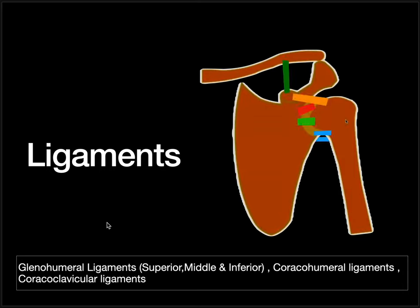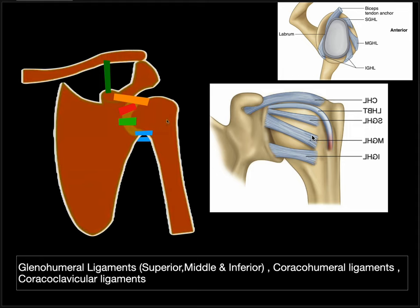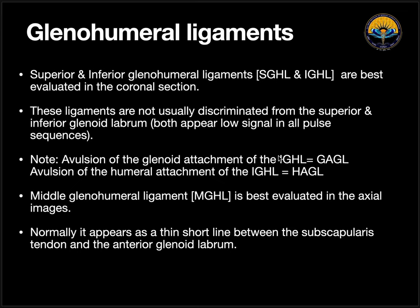Coming next to the ligaments. We have the coracohumeral ligament, and superior, middle, and inferior glenohumeral ligaments. The coracohumeral ligament runs from coracoid to humerus. If we remove it, we will see the biceps and the superior glenohumeral ligament. Importantly, the superior glenohumeral ligament cannot be discriminated from the superior labrum; the inferior glenohumeral ligament cannot be discriminated from the inferior labrum; and the middle glenohumeral ligament cannot be differentiated from the anterior labrum. This is something which needs to be kept in mind.